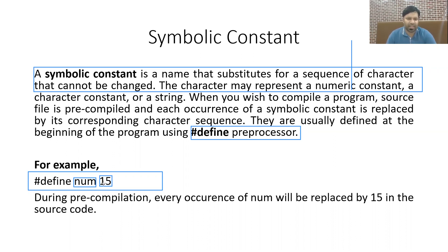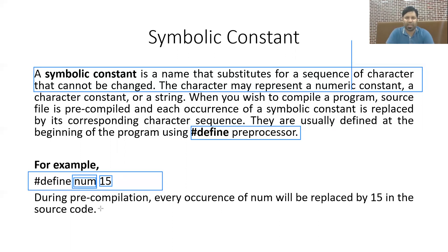So 15 is a constant, but rather than using this constant directly, we create a symbolic constant for it. When you write the program, wherever you use NUM — for example, a = NUM or b = NUM — the preprocessor will replace NUM with 15 everywhere it is used. This is very useful when you want to use the same value multiple times, perhaps 100 times. If you want to change that value, you only need to change it once in the #define, and it is updated at all 100 places.